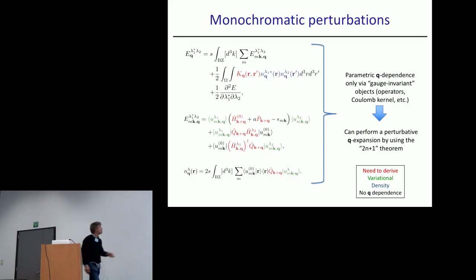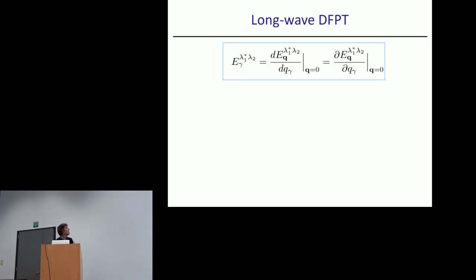This is a functional that mathematically depends parametrically on some Q, so I can treat this Q as if it were a generic perturbation parameter and perform a perturbative expansion using all the machinery of perturbation theory that we are used to, for example the 2n+1 theorem. The main relationship I need is that the total derivative with respect to Q of the second order energy equals the partial derivative of the variational functional, just because of the first order 2n+1 theorem, which is a flavor of the Hellmann-Feynman theorem.